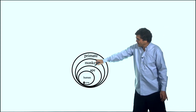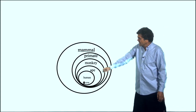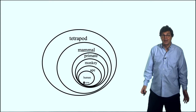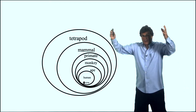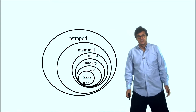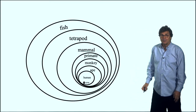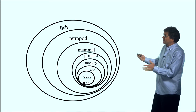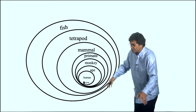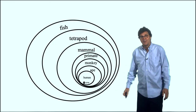So you're a primate. And primates are mammals, so you're a mammal. Tetrapod — why? Because you have four limbs, two legs and two arms. Tetrapods are a kind of fish, because fish came out of the ocean and started walking around.